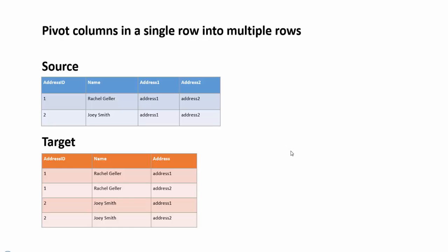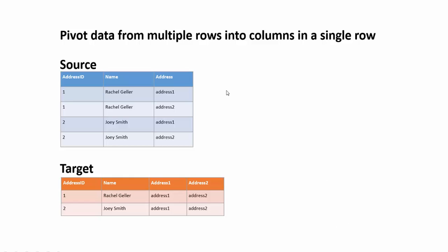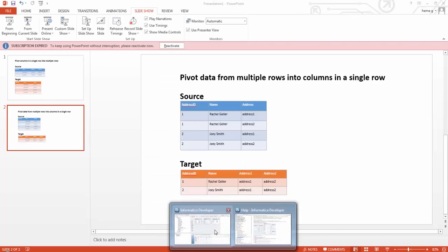In this session we'll see how to pivot data using Informatica. The first scenario is where we need to pivot columns in a single row into multiple rows — for example, if address ID 1 has two addresses, we want them in separate rows. This can be done using a Normalizer transformation. The second scenario is the opposite: pivoting data from multiple rows into columns in a single row, which can be done using an Aggregator transformation.